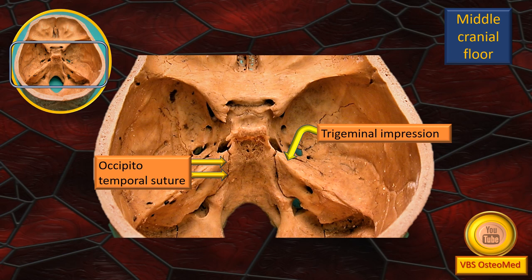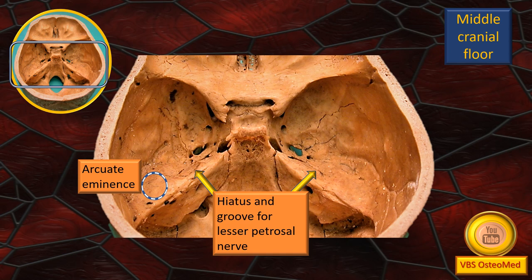Not very prominently seen in this specimen, but close to the apex of the petrous temporal, right above the foramen lacerum, is an impression for the trigeminal ganglion — we call it the trigeminal impression. Just note the location. Similarly, on a more posterior plate, two arrows point to the suture between the basi-occiput and the petrous part of the temporal bone — the petro-occipital suture. The anterior wall of the petrous temporal is also the posterior boundary of the middle cranial fossa.